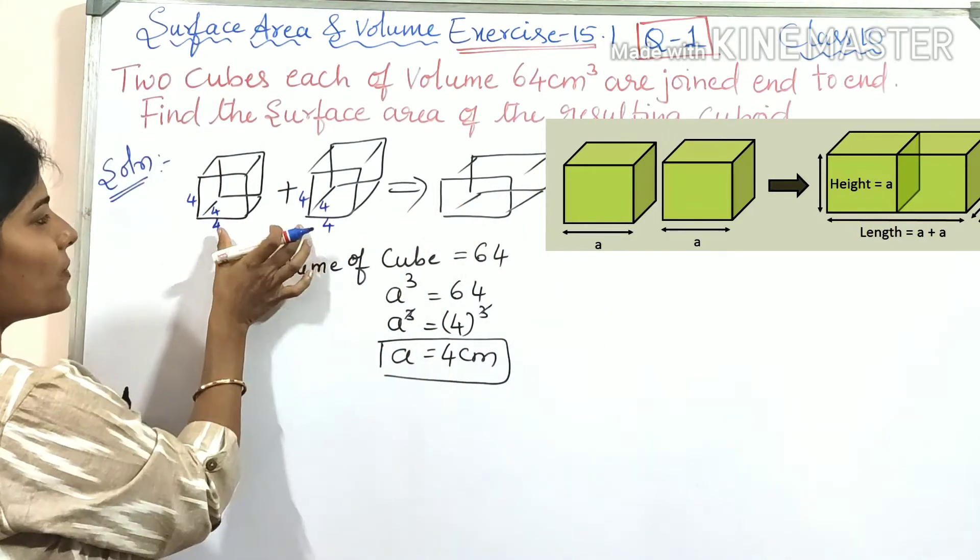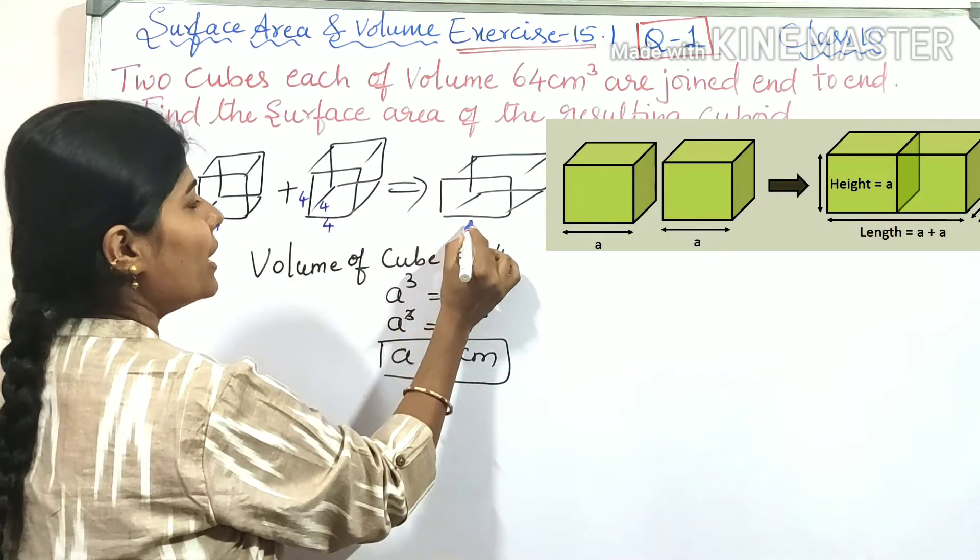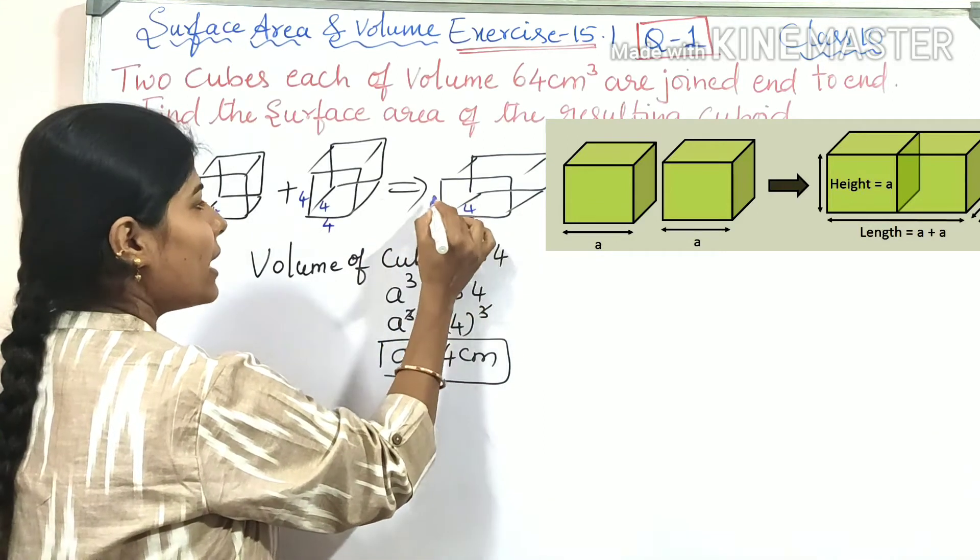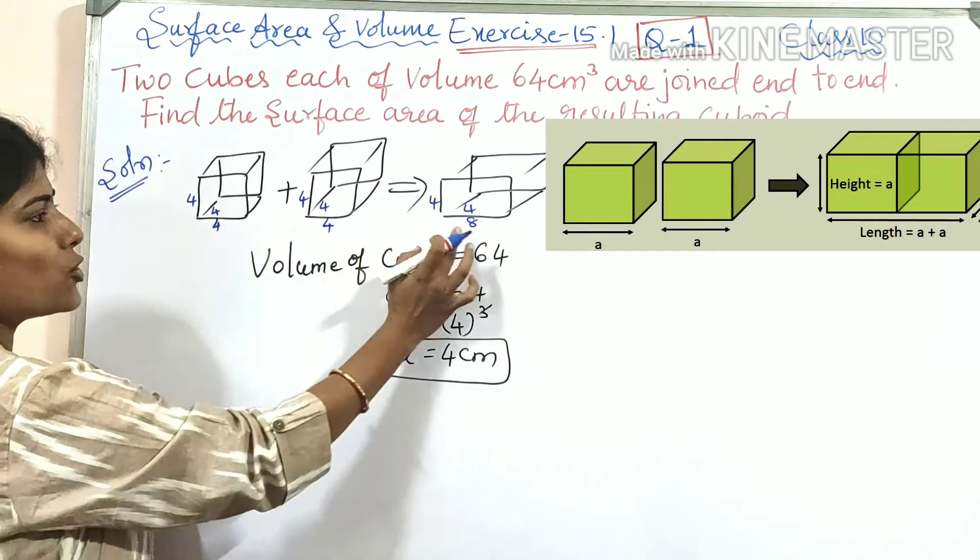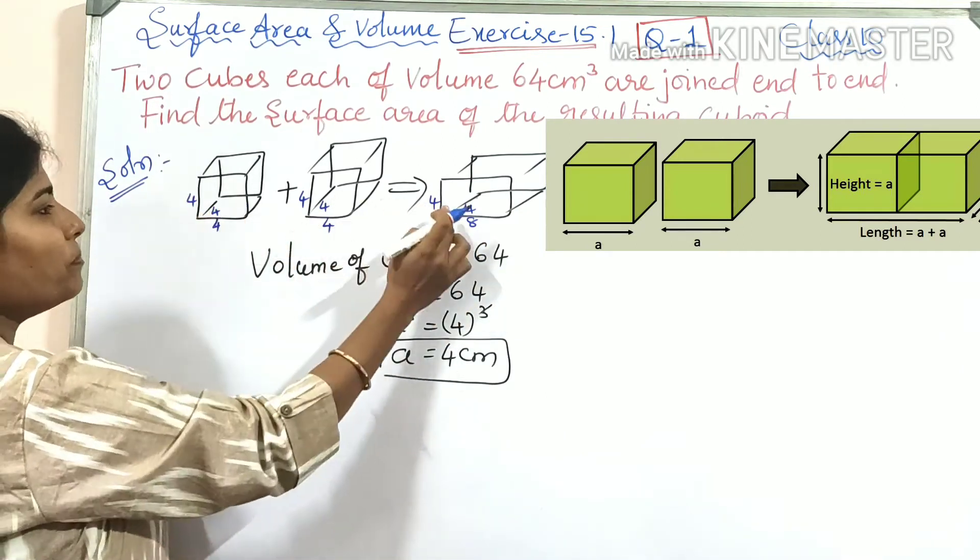Observe: the length increases, 4 + 4 = 8 centimeter. The lengths are added together, but the breadth and height remain the same at 4 centimeter.